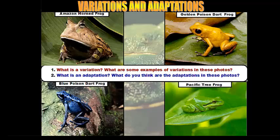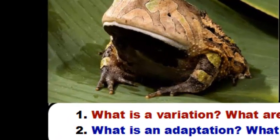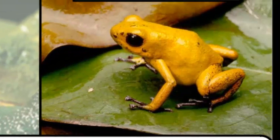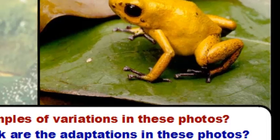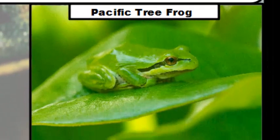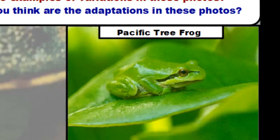If you take a look at foot shapes, the feet are fairly different when you compare the Amazon horned frog to the other three frogs. The Amazon horned frog's feet don't have big suction cups at the end, whereas the poison dart frogs do, and tree frogs do as well. There's a lack of suction cups in the horned frog compared to the other three species.